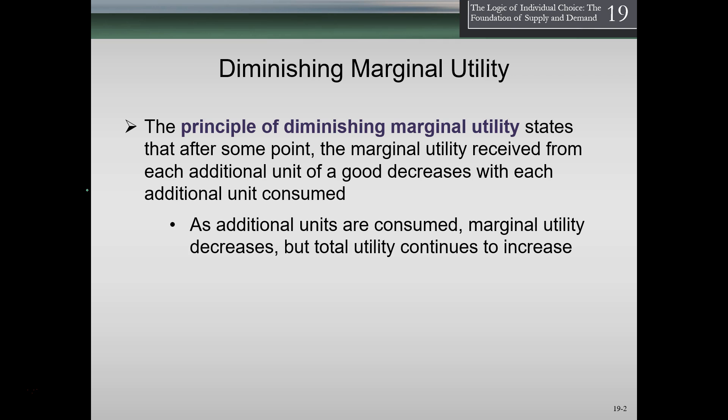As additional units are consumed, marginal utility decreases but total utility continues to increase. As we get another piece of pizza, the total utility is going to go up — we're still benefiting from it, we're still receiving pleasure from it. However, it's going to go up at a decreasing rate.